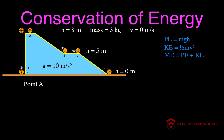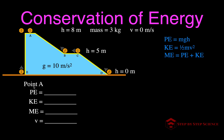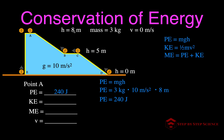We have our potential energy, kinetic energy, and mechanical energy equations. Let's look first at point A. We want to find the potential energy, kinetic energy, mechanical energy, and velocity. The potential energy is simply mass times g times height — that's 3 times 10 times 8, which gives us 3 times 10 equals 30, and 30 times 8 equals 240. So at the top the ball has a potential energy of 240 joules.